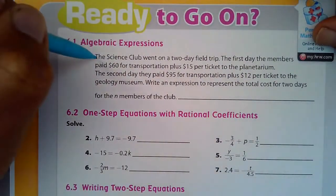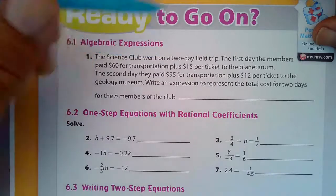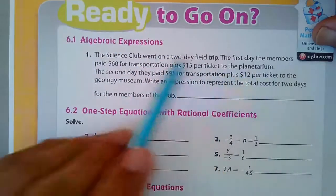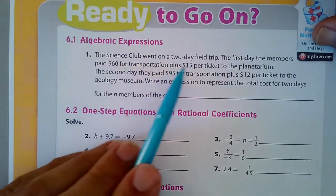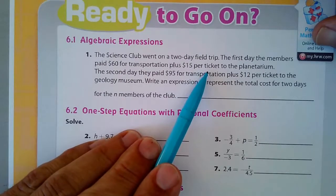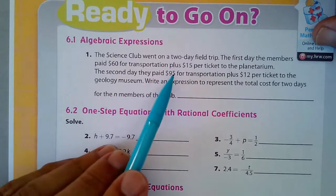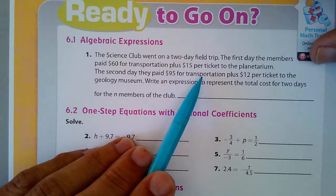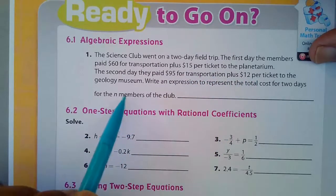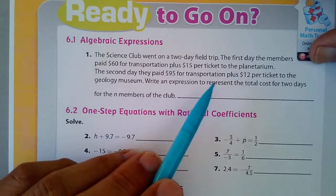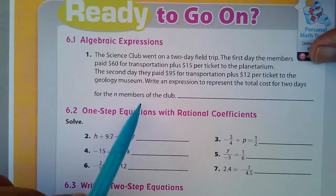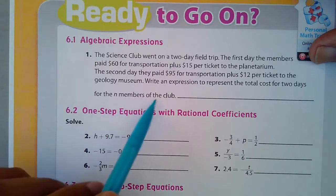Number one, Science Club went on a two-day field trip. The first day the members paid $60 for transportation and $15 per ticket to the planetarium. The second day they paid $95 for transportation plus $12 per ticket to the geology museum. Write an expression to represent the total cost for two days for the n members of the club.